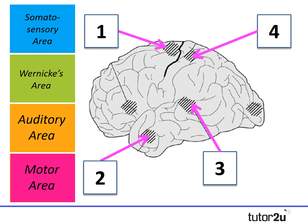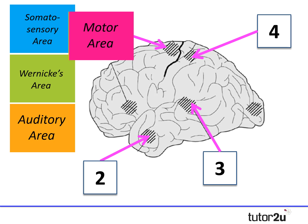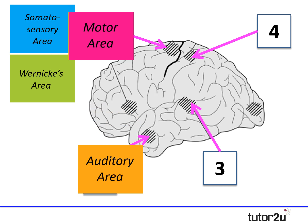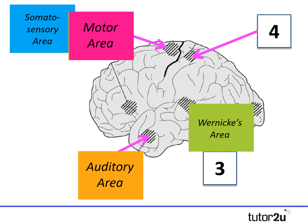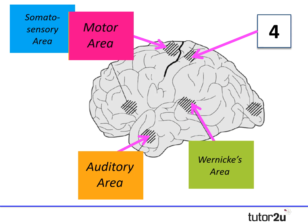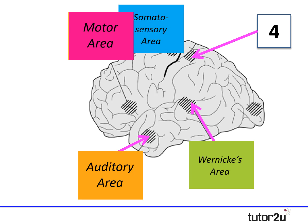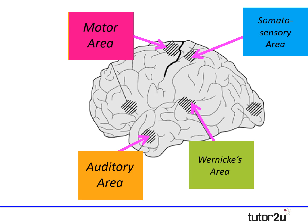Looking at the diagram on screen: region 1 is the motor area, region 2 at the bottom is the auditory area, region 3 is the Wernicke area — that specific part of the language centre — and last but not least, number 4 is the somatosensory area.